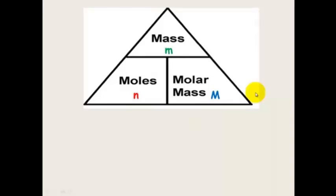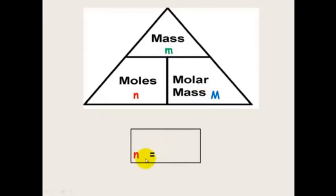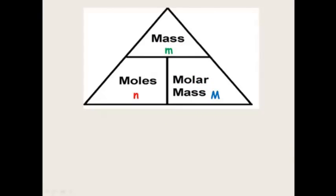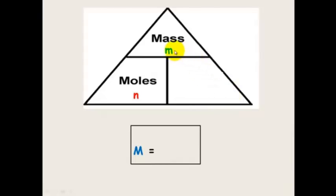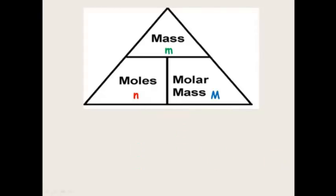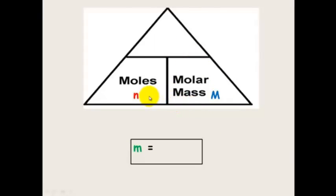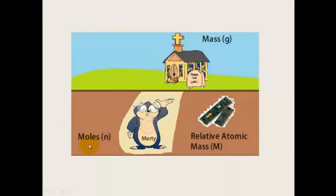The easiest way to remember it is to put these into a triangle. Moles at the bottom, mass at the top, molar mass on the other side. If you want to solve for n, cover up the number of moles and you'll see it equals little m over big M. To solve for molar mass M, cover molar mass and it equals little m over n. To find mass, cover mass in the triangle — these two are on the same level so you multiply them — giving n times M. Thanks to Will for this great diagram.